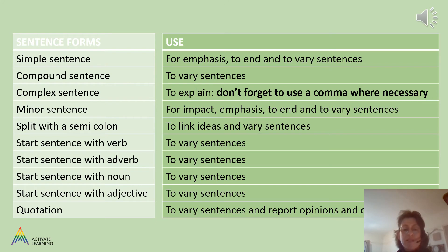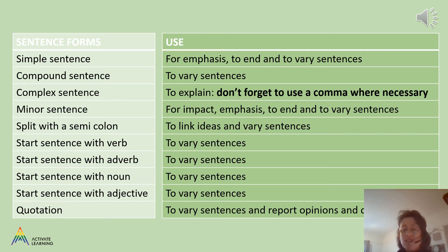How do we use different sentences? As you can see, there are lots of different reasons for using different sorts of sentences — you can emphasise, vary your sentences, explain, report dialogue and link ideas. A simple sentence would be used for emphasis and to end or vary sentences. A compound sentence is used to vary sentences. A complex sentence is used to explain — and don't forget to use a comma around the extra information where necessary. A minor sentence is for impact, emphasis and to end, start and vary sentences. Split with a semicolon to link ideas and vary sentences. You can start with a verb, adverb, noun and adjective to make your sentences variable, and use quotations to report opinions.